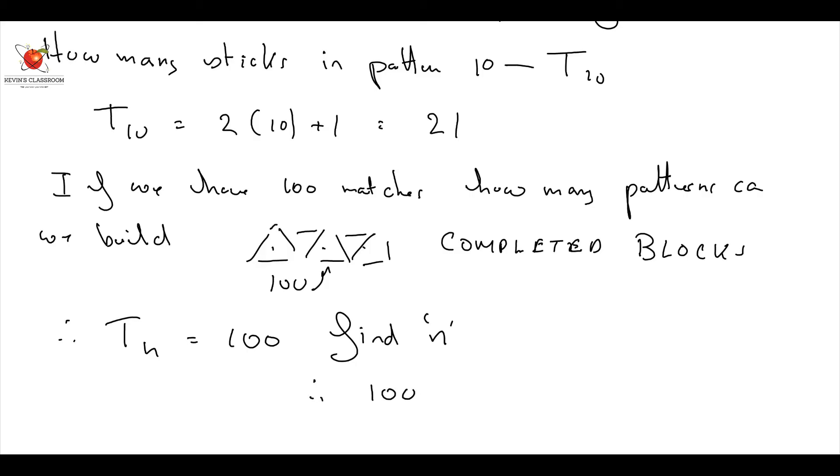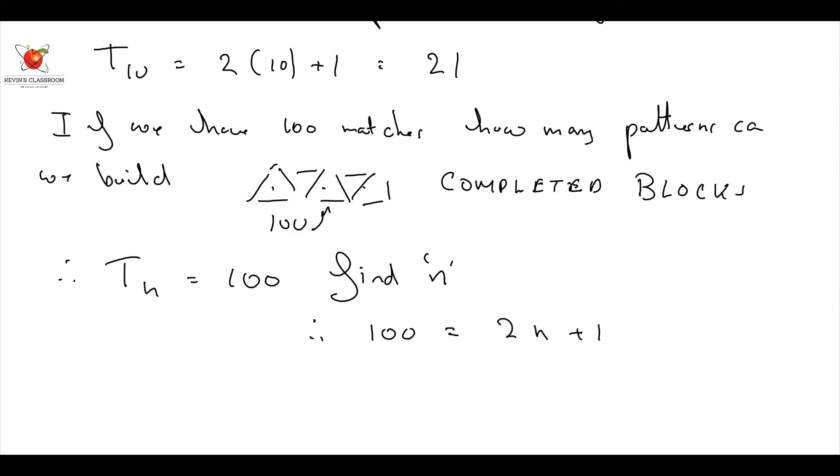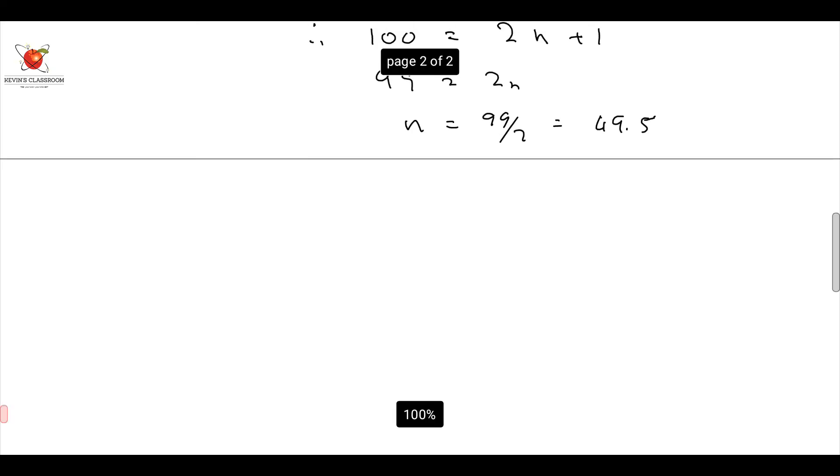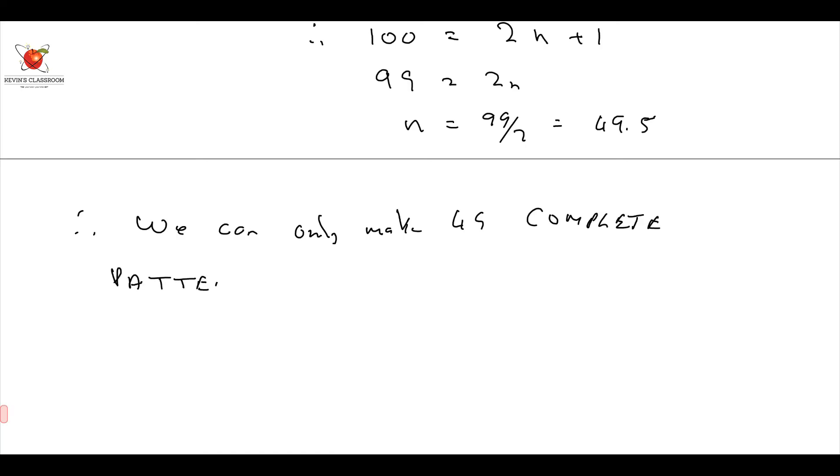Therefore, I say 100 equals 2N plus 1, correct? And my final thing will be, therefore, it's going to be 99 is equal to 2N. Therefore, N is 99 divided by 2, and my answer is going to be 49.5. But guys, we cannot have 49.5. I can therefore, we can only make 49 complete patterns.